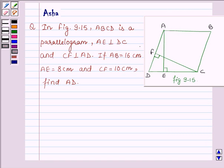Hello and welcome to the session. Let us solve the following question which says in figure 9.15 ABCD is a parallelogram. AE is perpendicular on DC and CF is perpendicular on AD.